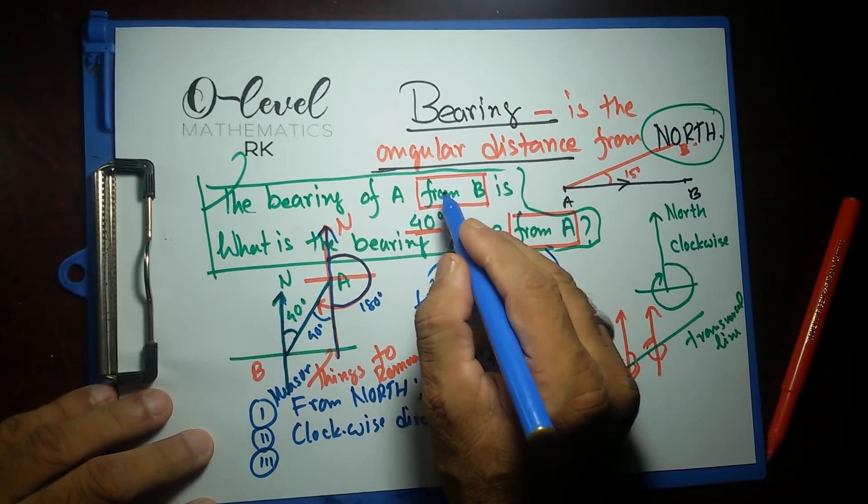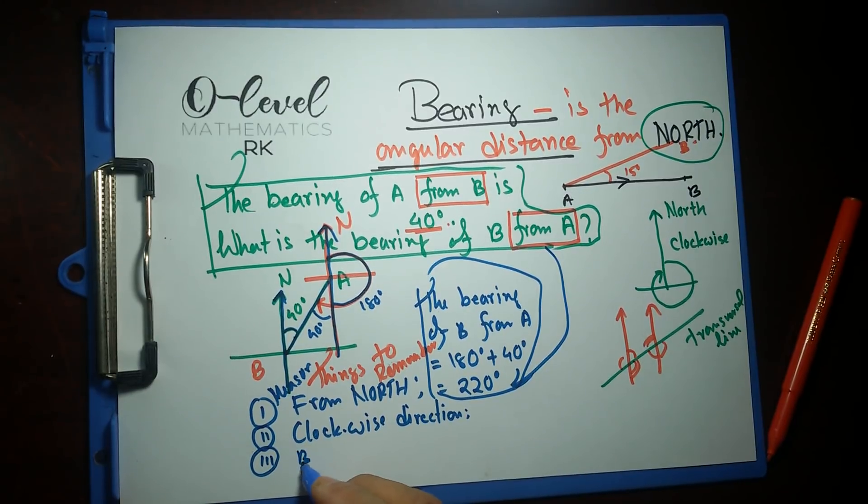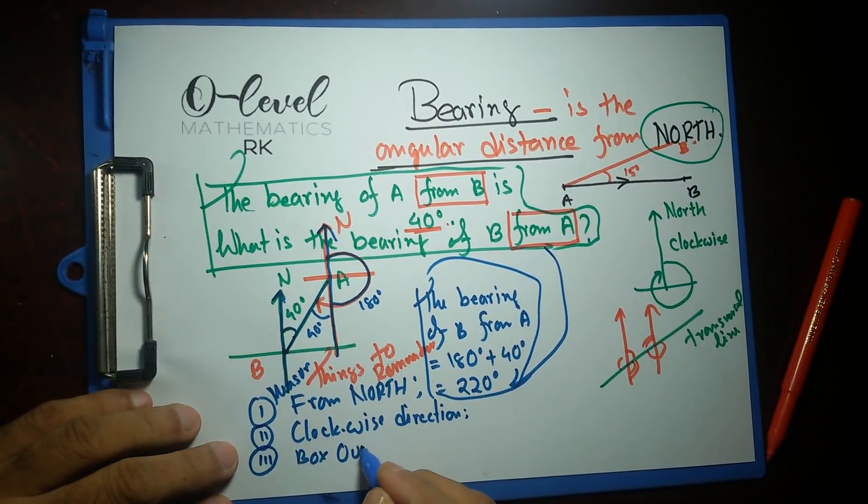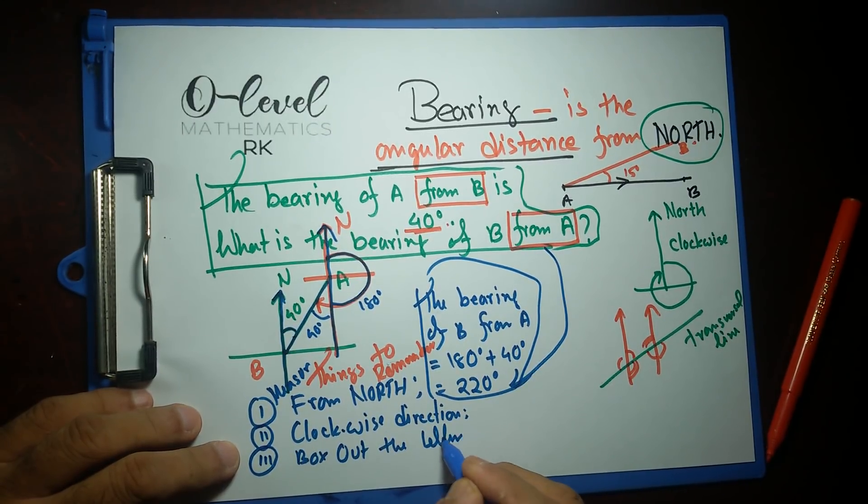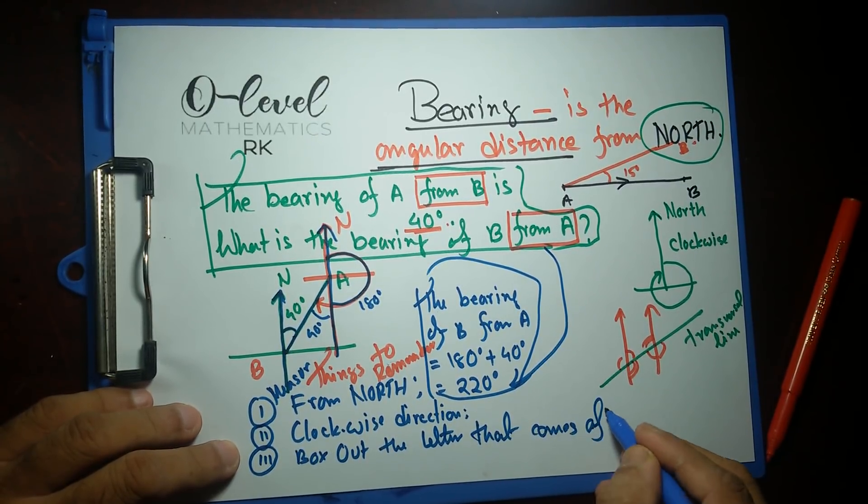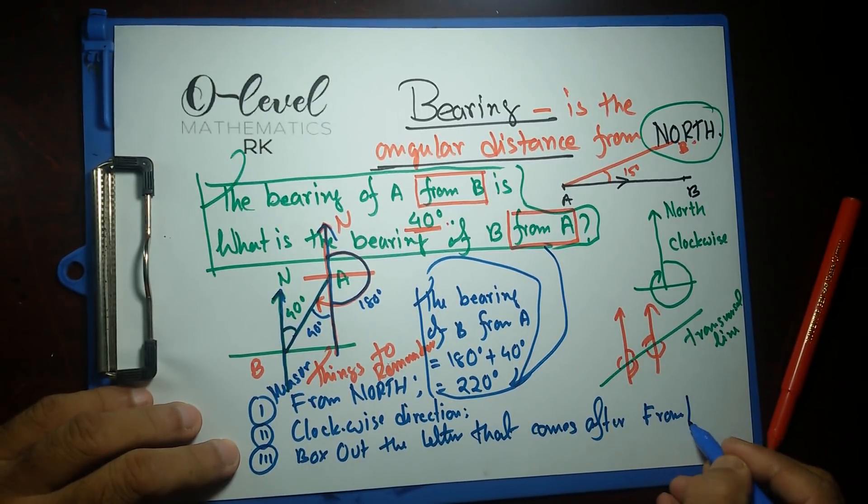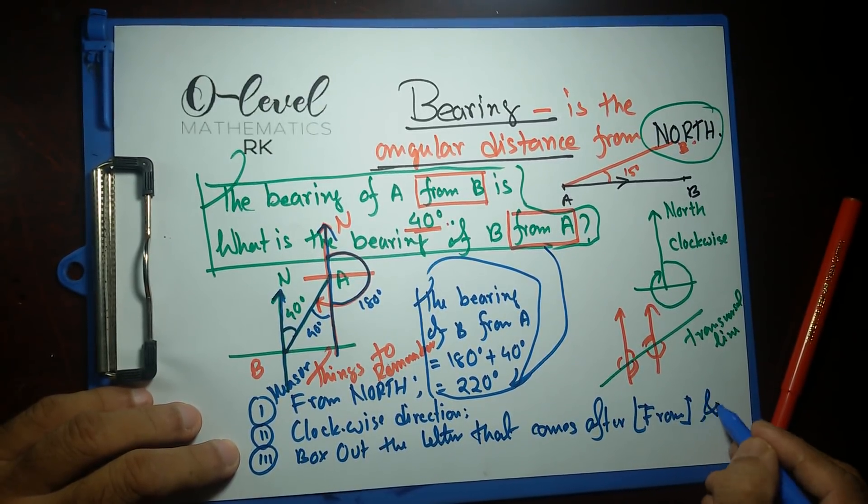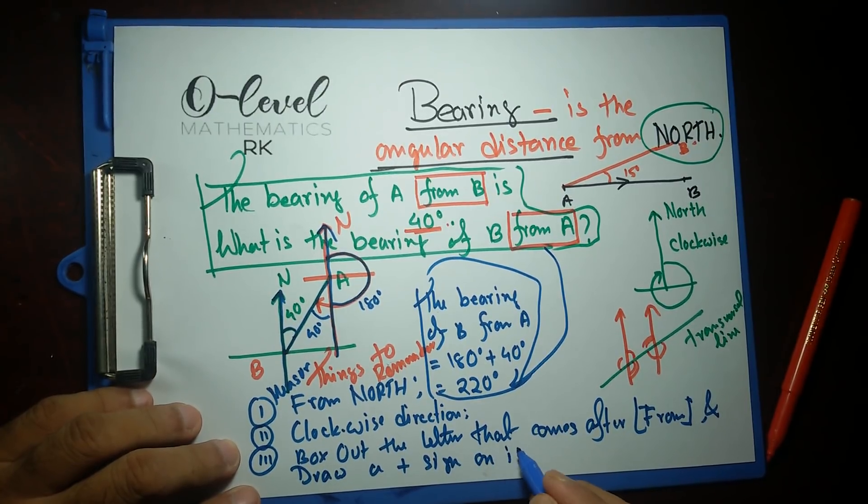Number three: when you read the question, box out 'from.' Box out or circle out the letter that comes after the word 'from.' And draw a plus sign on it.